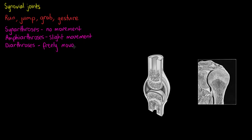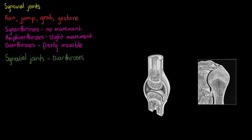With that we'll start our description of the synovial joints. All of our synovial joints within the body are diarthroses, so they are freely movable. The synovial joints also involve bones that are separated by a fluid-filled joint cavity.